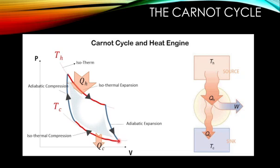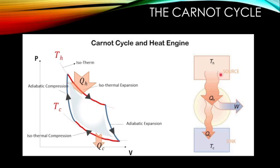Then after that, it will undergo an isothermal compression where the heat will be given out to the colder reservoir, maintaining the same temperature throughout. And then it will complete the cycle by undergoing an adiabatic compression, where the temperature returns back to the high temperature TH, as represented in the diagram.